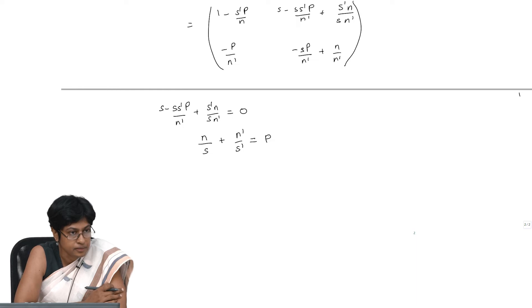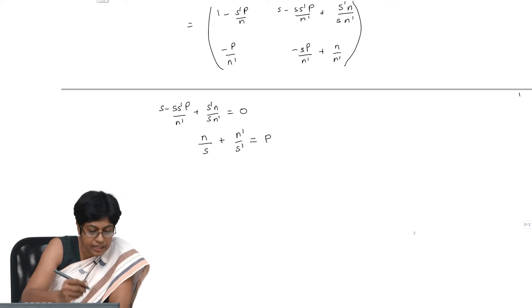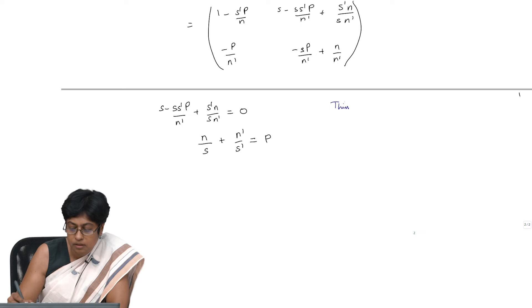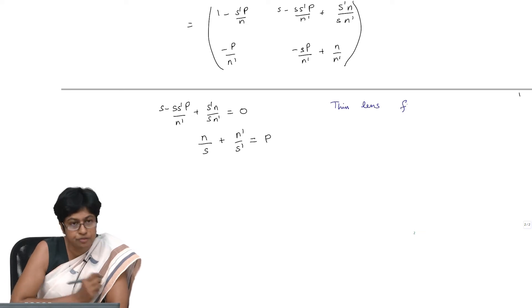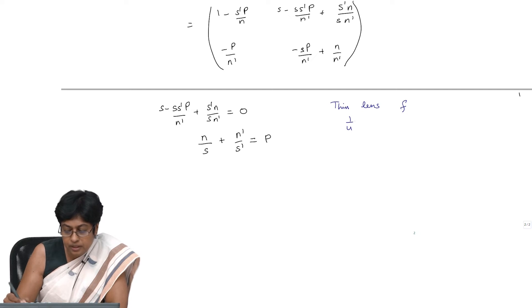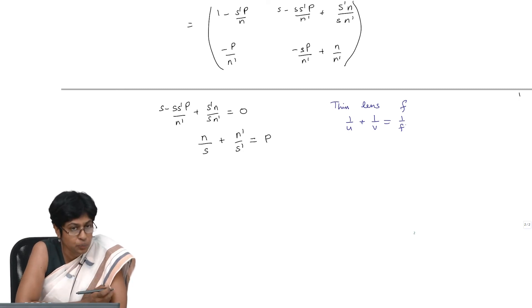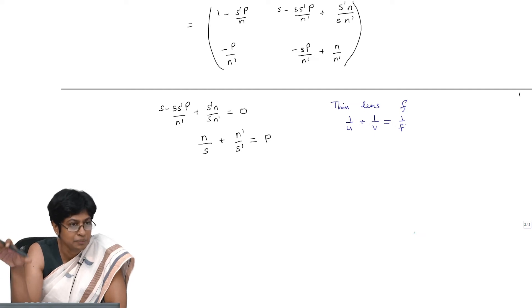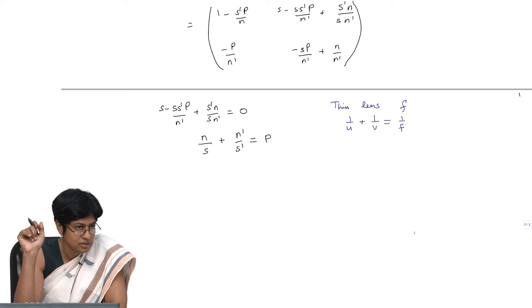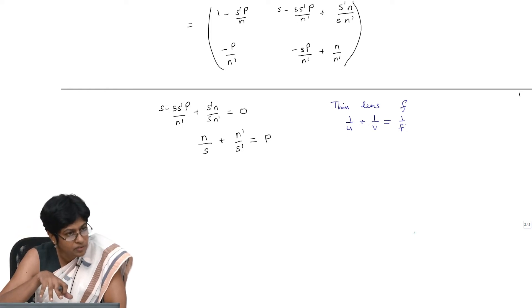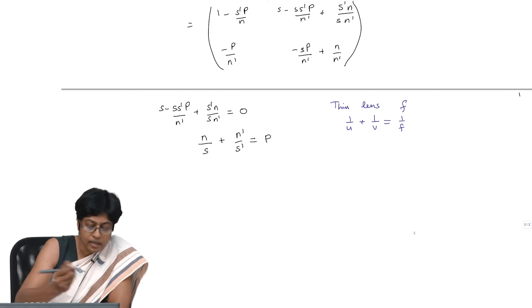Just rewriting it, and this should look familiar to you now. When we had a genuine thin lens with focal length f, we arrived at an imaging equation which was 1 by u plus 1 by v is equal to 1 by f. In this case we had assumed that the object refractive index—this index of the object space and the refractive index of the image space—were equal, and we arrived at this equation. And you can now see that the equation we have here is very similar.